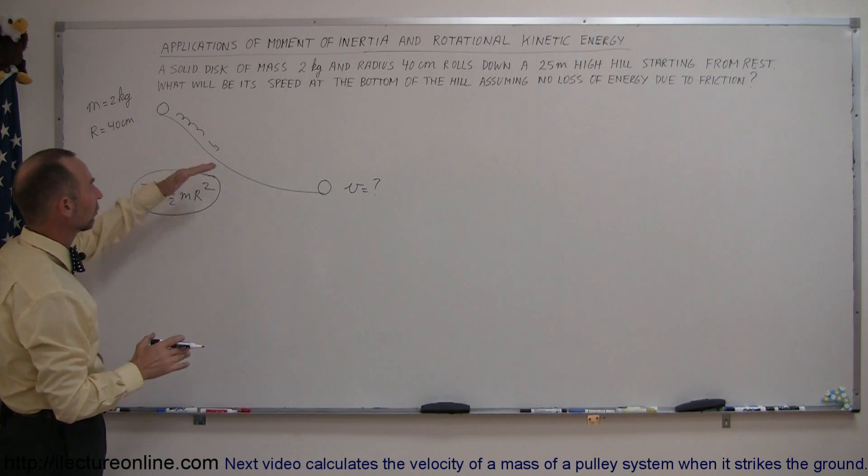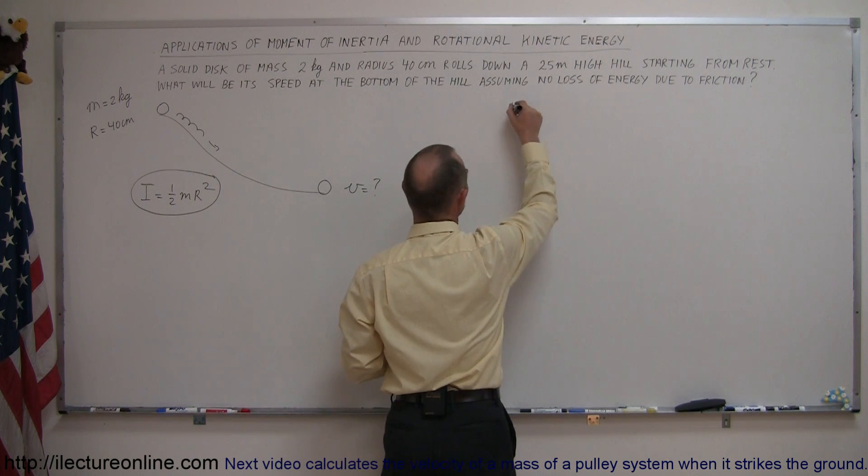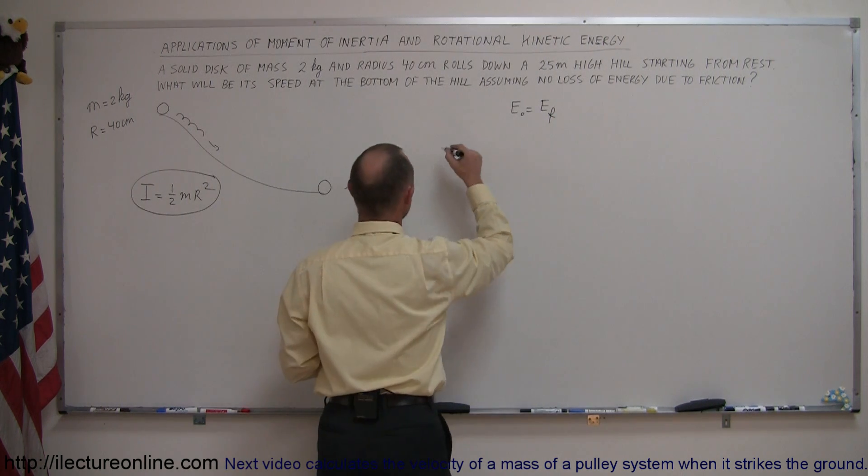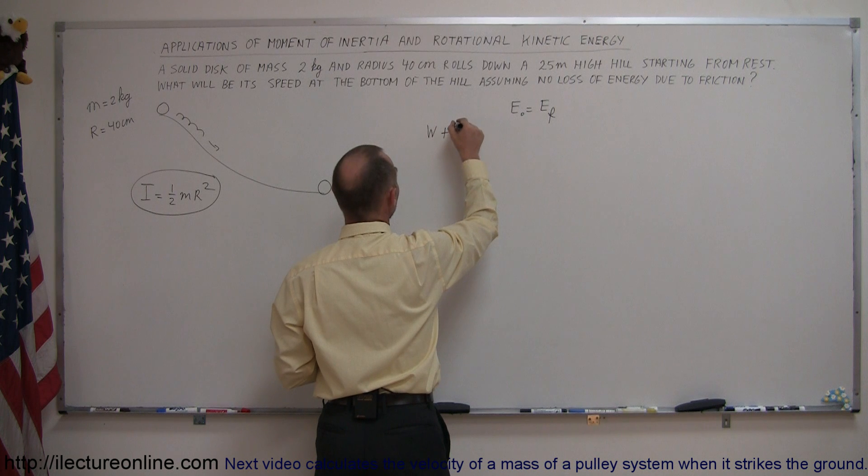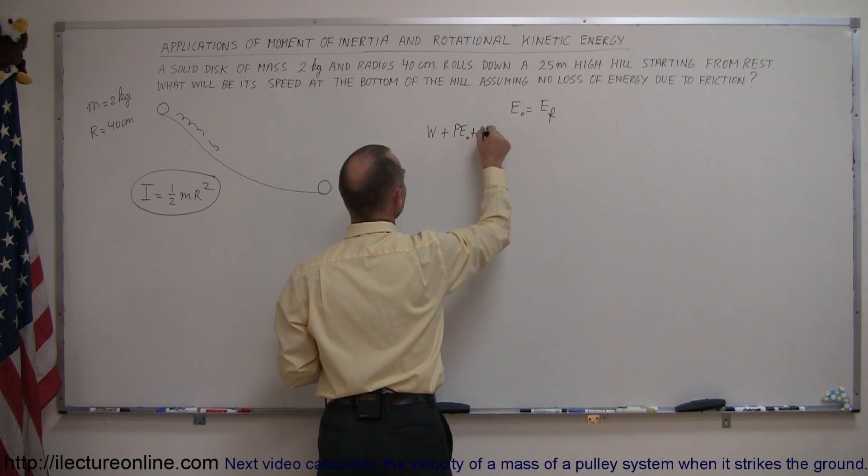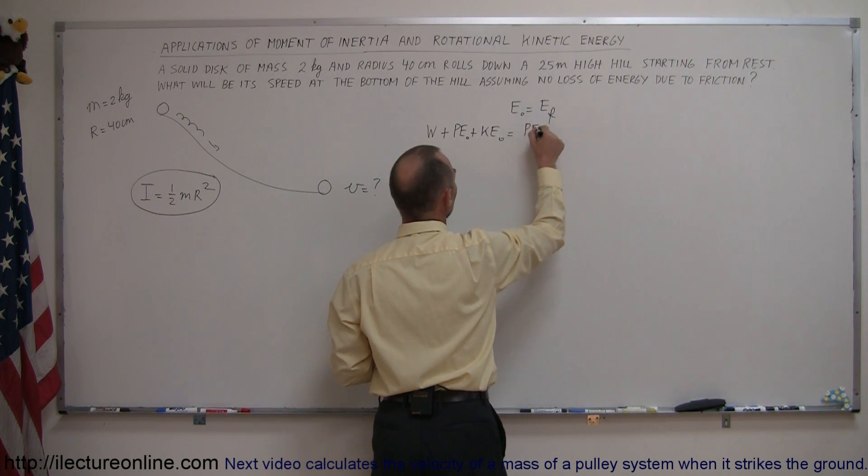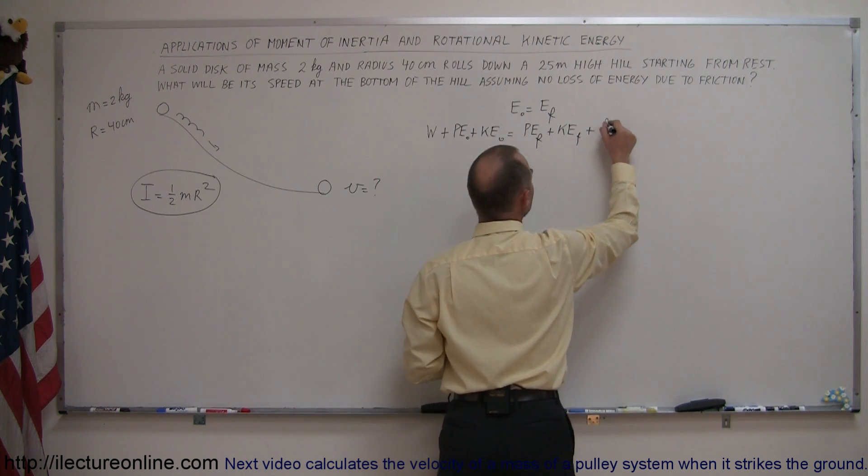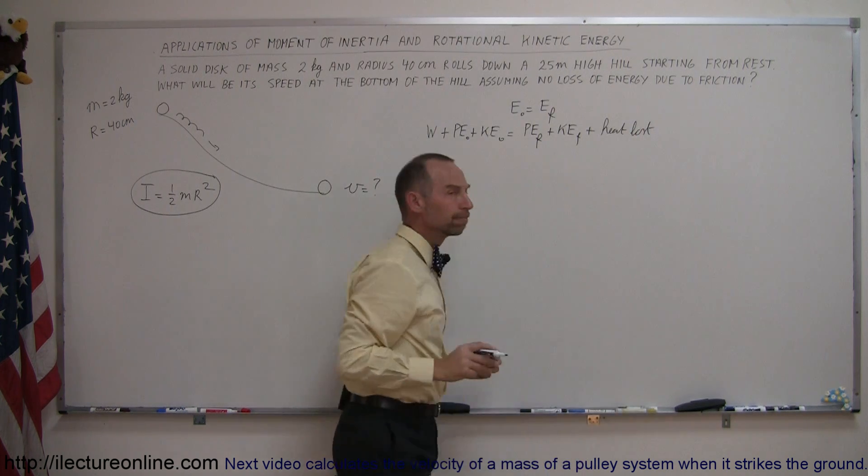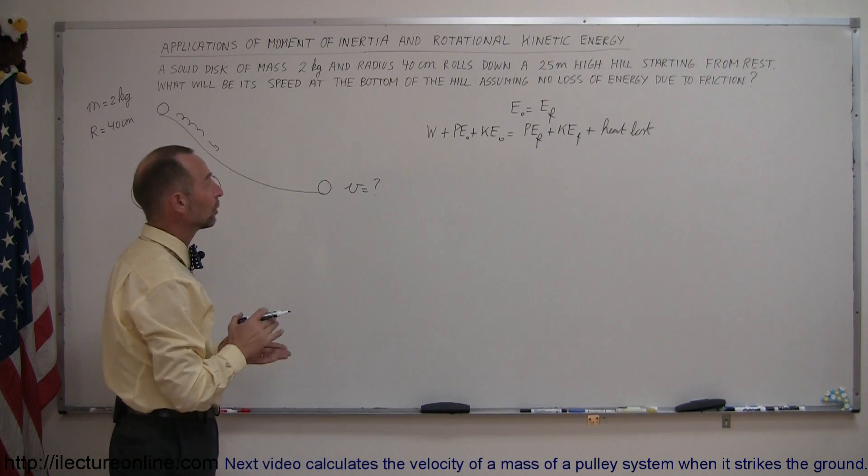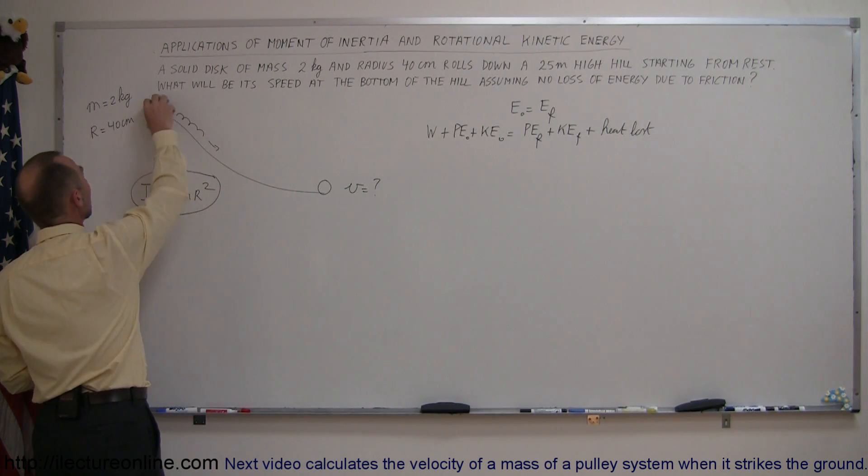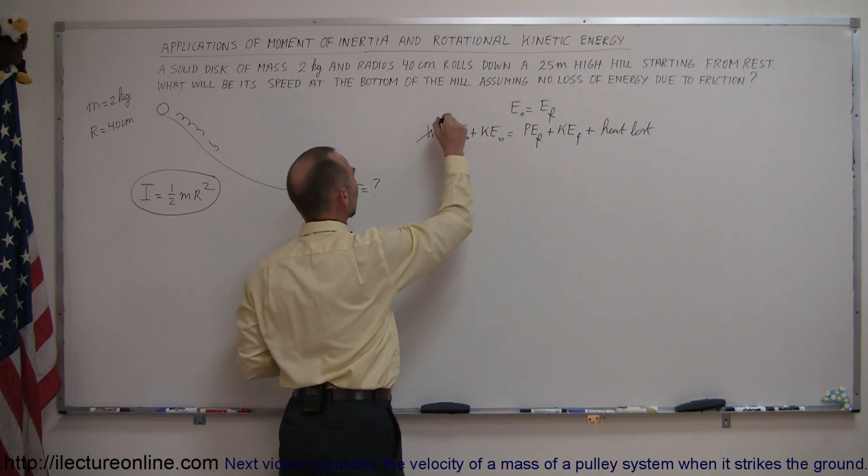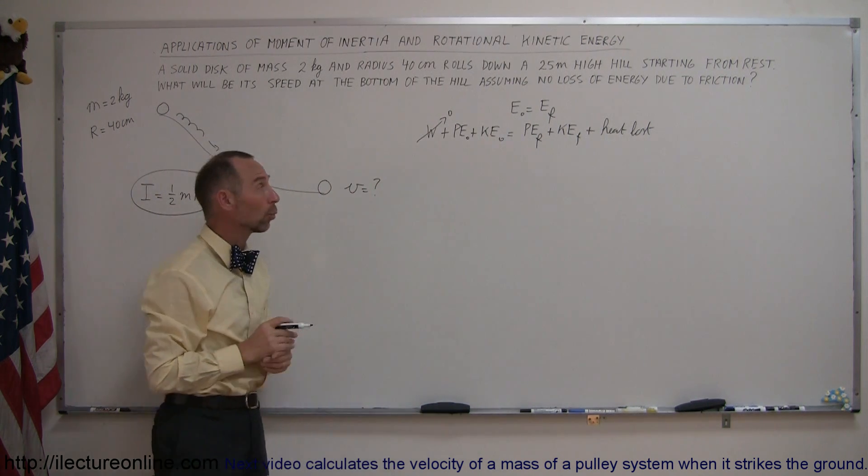And now we're going to use the energy equation to solve the problem. We can say that energy initial equals energy final. We can say that any work input into the system plus any potential energy initial plus any kinetic energy initial will be equal to potential energy final plus kinetic energy final plus any heat lost due to friction. Now we can determine which of these we have and which ones we don't. Is there any work input? Well initially we somehow got the wheel up to the top, but if we just assume that that's then resulting in some potential energy, we can assume that there's no work input into the system.